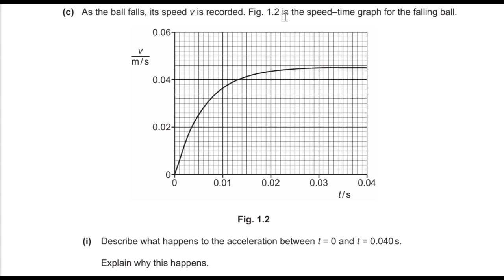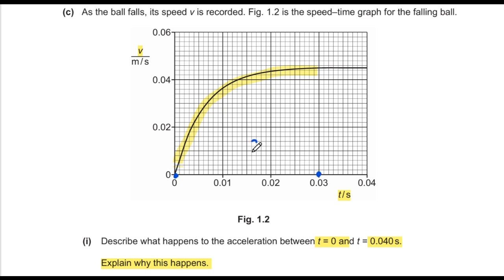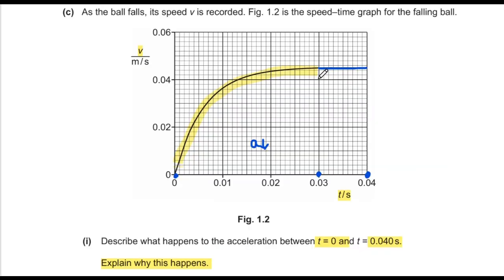Part C says as the ball falls, its speed is recorded and a speed-time graph is made — velocity on the y-axis and time in seconds on the x-axis. Part one asks to describe what happens to acceleration between t = 0 and t = 0.040 seconds. From 0 to 0.03 seconds the graph is a curve, similar to a decreasing acceleration pattern — velocity is increasing non-uniformly and acceleration is decreasing. After that, the graph becomes a straight line: velocity is constant and acceleration is zero.